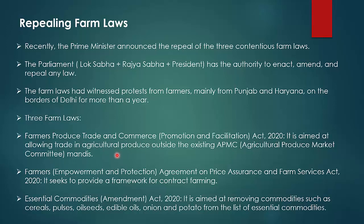The Farmers' Produce Trade and Commerce (Promotion and Facilitation) Act, 2020 was aimed at allowing trade in agriculture produce outside the existing APMC — Agriculture Produce Market Committee. Until this law, farmers had to sell within APMC markets; the new farm laws allowed them to sell in any market in the whole country.